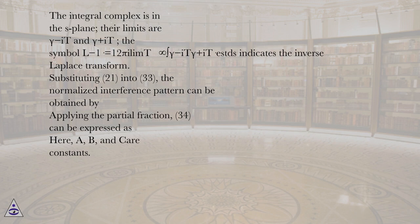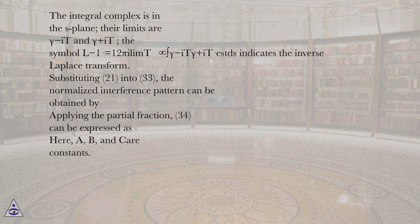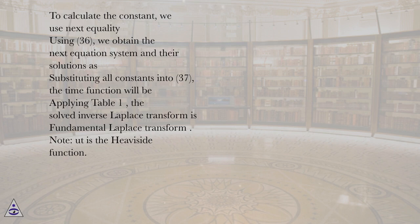Substituting equation 21 into equation 33, the normalized interference pattern can be obtained by applying the partial fraction. Equation 34 can be expressed as shown here, where A, B, and C are constants.